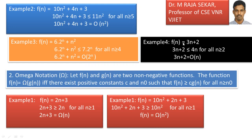Example 4: f of n equal to 3n plus 2. Since n dominates the constant, instead of 3n I write 4n. Checking for n equal to 1: 5 is not less than or equal to 4. For n equal to 2: 8 less than or equal to 8 — it holds. So it holds for all n greater than or equal to 2, and therefore f of n equals big O of n. This concludes the big O notation.